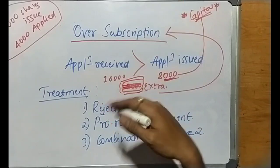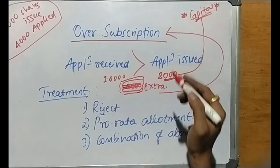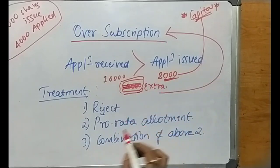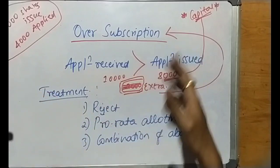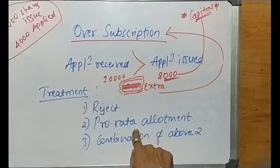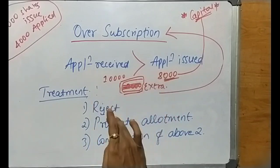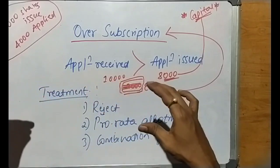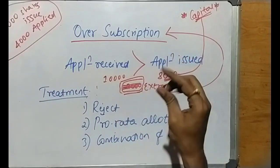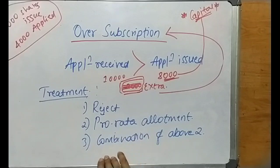The second option is Pro Rata Allotment, also called Proportionate Allotment — we will discuss that in detail in the next video. The third option is a combination of both option one and option two — some applications are rejected and the rest receive pro rata allotment.